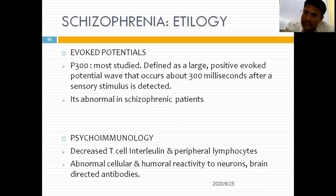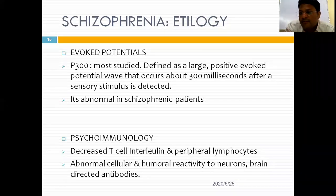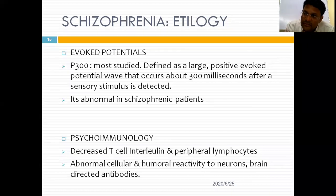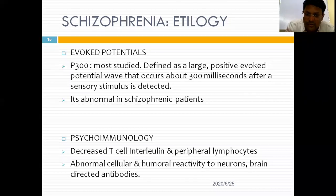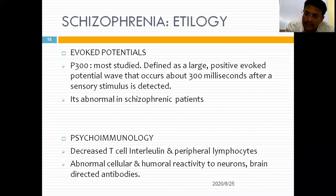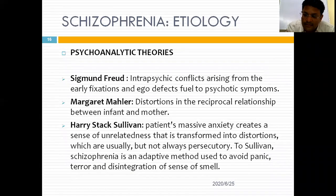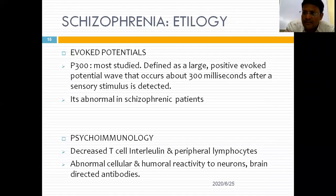Regarding evoked potentials, the P300 wave — a large positive evoked potential occurring around 300 milliseconds — is most studied and is reduced in schizophrenics. In psychoimmunology, antibodies are produced against neurons in the brain, involving both cellular and humoral immunity. In the periphery, lymphocytes are decreased and T-cell interleukins are reduced.